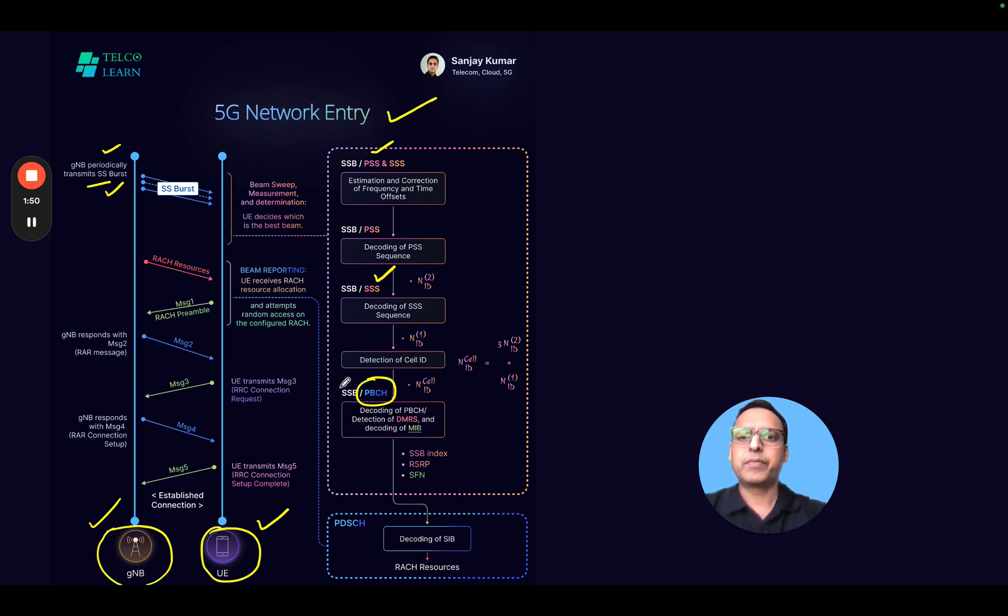The very first thing the user does is decode the PSS sequences. PSS and SSS together help the user estimate and correct the frequency and time offset. The PSS comes with three values: 0, 1, and 2.